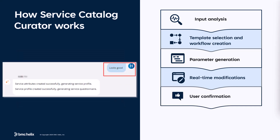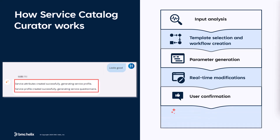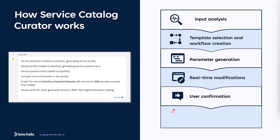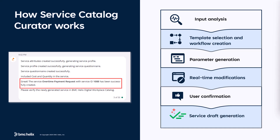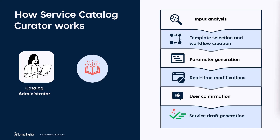Before execution, it asks for user confirmation and streams the status. Finally, it generates a service draft with a unique service name and ID. The Service Catalog Curator makes service creation simple, with smart AI suggestions, real-time interaction, and built-in localization, all in one place.